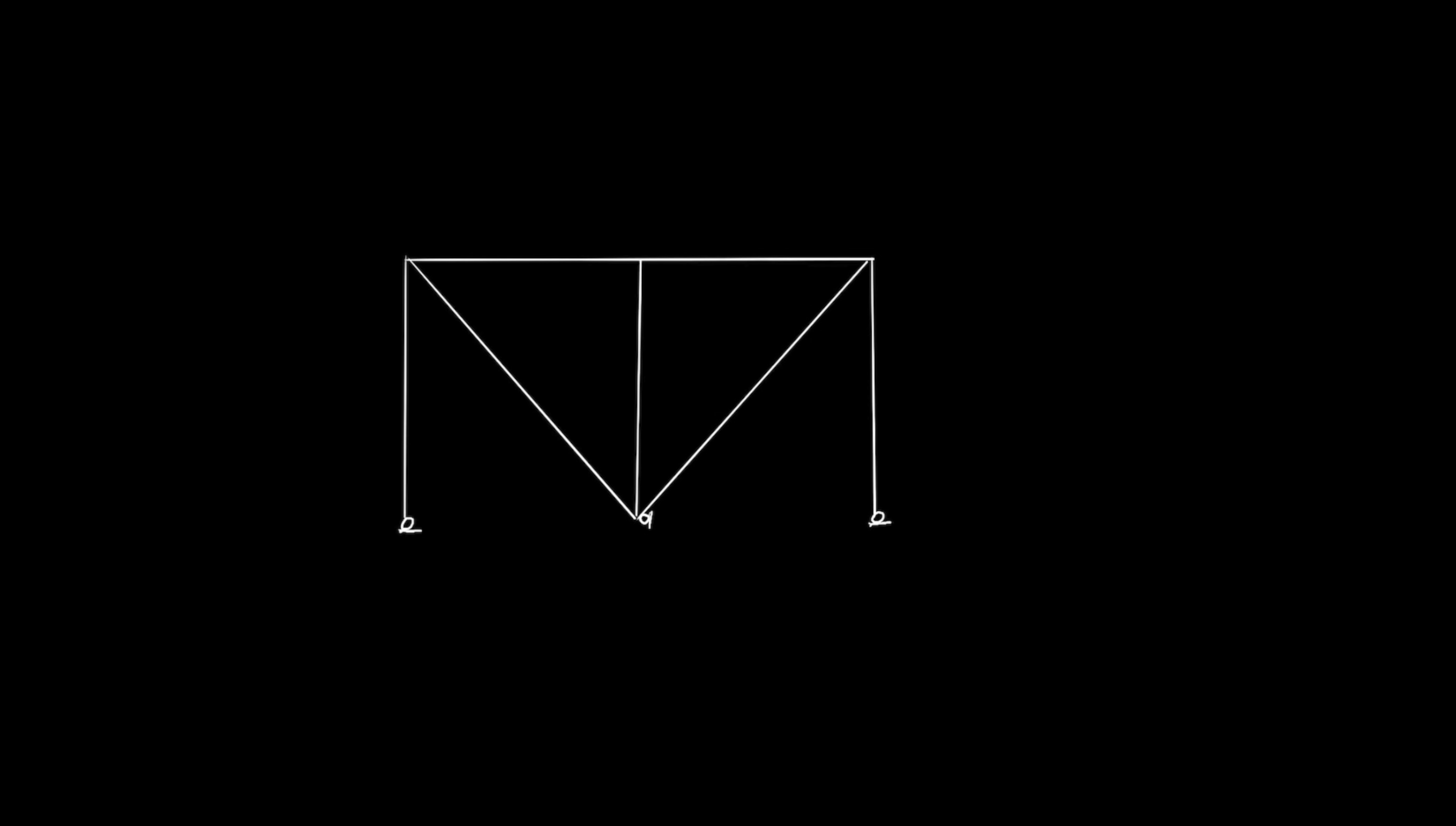If we analyze the chevron brace on a single level in 2D, assuming that the corners will take the compression and tension, and the center will only resist the horizontal force, we can see that the windward diagonal is put into compression and the leeward diagonal is then in tension.